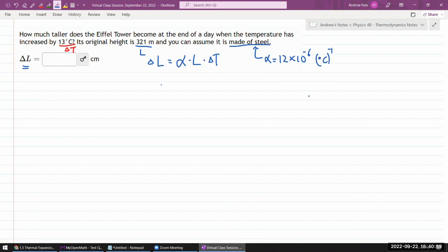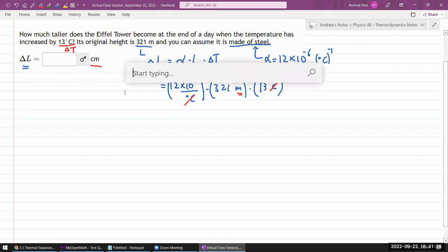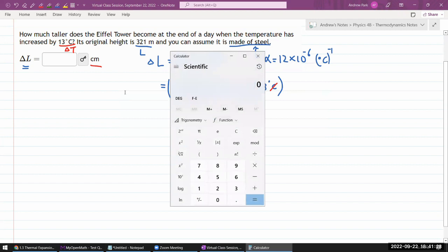So I can just plug in the numbers. Let me put in the numbers to make sure the units come out right. Times the length, 321 meters, times the change of temperature, 13°C. Okay, the units do come out right. These cancel and I have meters left, which I will convert to centimeters for the final answer.